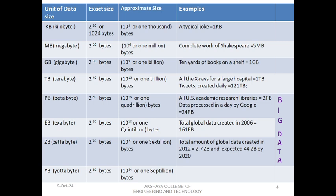The size of the data is defined by units: kilobytes, megabytes, gigabytes, terabytes, petabytes, hexabytes, zettabytes, and yottabytes. We can see this in terms of exponentiation from 2 to the power of 10 up to 2 to the power of 80. For example, normal text data could be 1 KB, whereas videos we record will be in MBs.